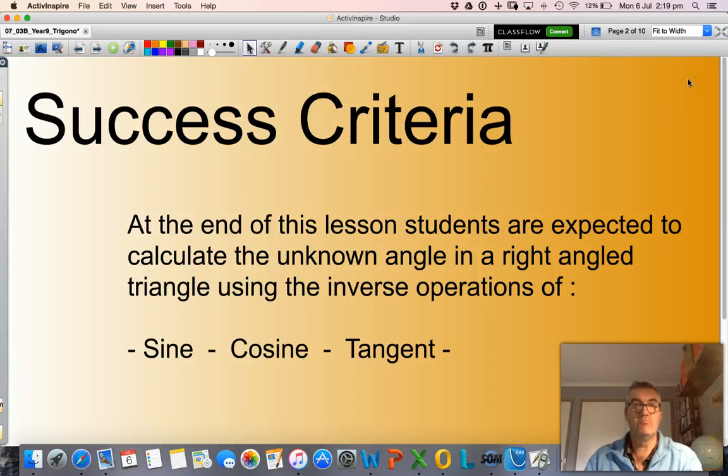Hello and welcome. In this presentation we will be looking at calculating the unknown angle in a right angle triangle when two side lengths have been provided. We will be using the inverse operations of either the sine, cosine or tangent functions.